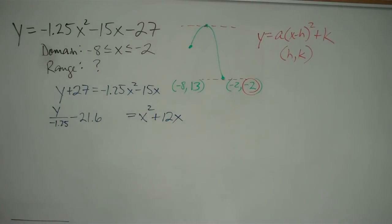And so now I have to add something to both sides of my equation that are going to give me a perfect square. And the way I do that is by taking that 12, cutting it in half to get 6, and adding 6 squared to both sides. So on my right side, what I have now is x plus 6 squared. I have that because I designed it to be that way. This is a perfect square. And on my left side, I have y over negative 1.25 minus 21.6 plus 36 gets me plus 14.4.